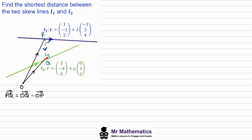We'll include the origin in our diagram, so we've got O to P and O to Q. We can see that P to Q will be negative O to P plus O to Q. We know O to Q will be the general point along this line given by its equation, so we've got (2 + 0μ, −4 + 3μ, 0 + 2μ). We can do the same for O to P, where the general point is (1 − λ, −1 + 3λ, 2 + 4λ).